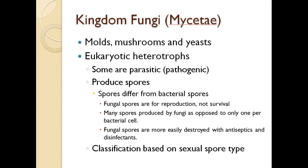The classification of mycetae is based on the sexual spore type. Molds, mushrooms, and yeast can reproduce both sexually and asexually. Some of these groupings are unable to reproduce asexually, and there's a group called the deuteromycetes for which a sexual stage has not yet been found.